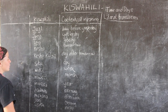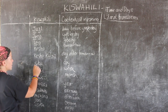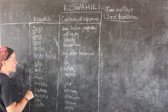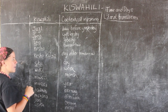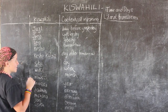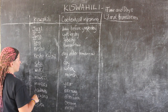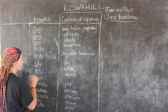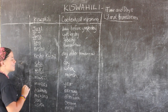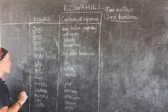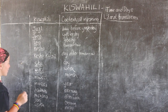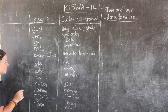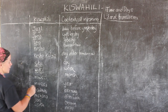Siku literally means day — so any given day is siku. Wiki is an easy one — it means week.